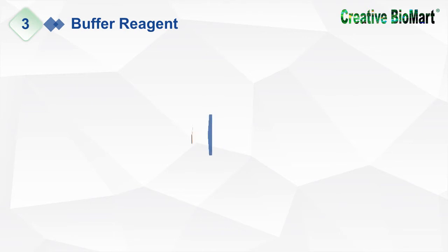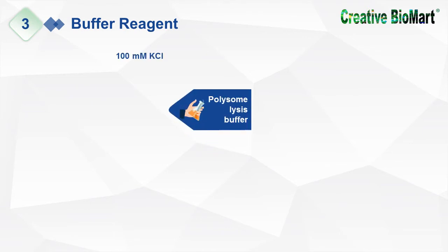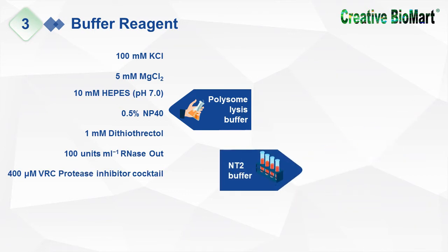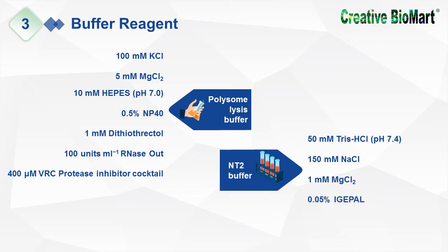Part 3: Buffer Reagents. Polysome lysis buffer consists of potassium chloride, magnesium chloride, HEPES (4-(2-hydroxyethyl)-1-piperazineethanesulfonic acid), NP-40, dithiothreitol, RNase Out, and VRC-protease inhibitor cocktail. NT2 buffer includes tris-hydroxymethylaminomethane hydrochloride, sodium chloride, magnesium chloride, and IGEPAL.